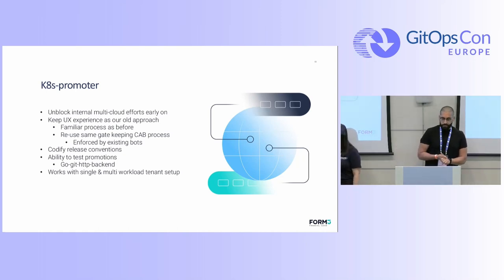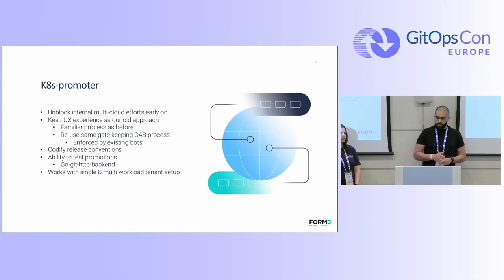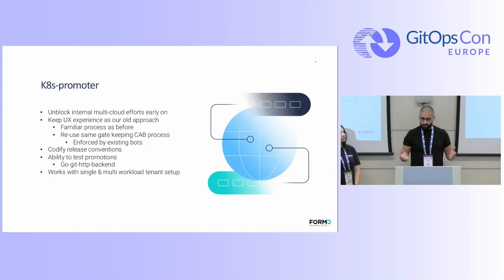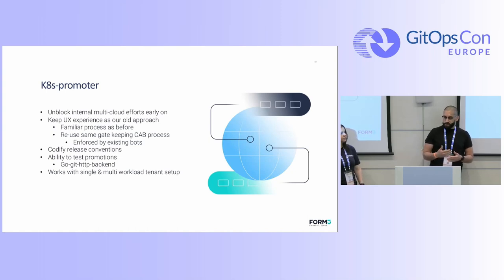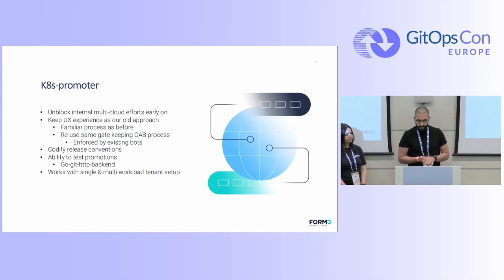As Adelina said, we wanted to unblock the internal multi-cloud efforts very early on and build on top of it. We didn't want to invest in changing the whole CI flow or replacing it with anything new. So we kept the developer experience of our old approach — the PR approach — quite familiar to us. We wanted to be able to gatekeep using our existing CAB process — the change advisory board — which is quite specific to our industry. We already had quite a lot of bots and integrations to do these checks and info security aspects.